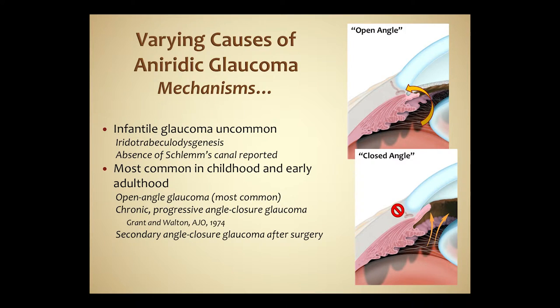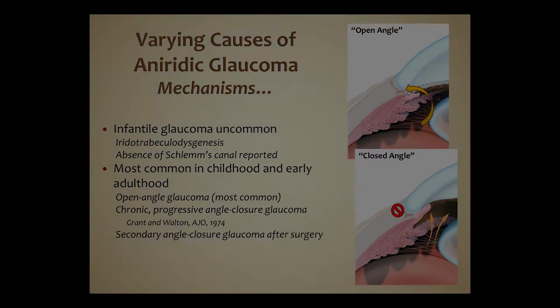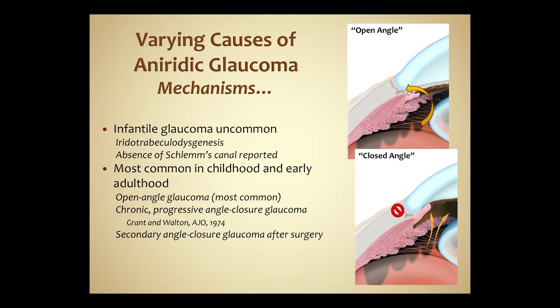Aniridia glaucoma has multiple mechanisms. Infantile glaucoma is very uncommon; when it does occur, it's oftentimes due to iridotrabecular dysgenesis. Absence of Schlemm's canal has been reported, but this is very rare. Most commonly, this problem occurs during childhood and early adulthood and is usually due to open-angle glaucoma. It can also be due to chronic progressive angle-closure glaucoma, though this is uncommon in our experience. Secondary angle-closure glaucoma after surgery is also relatively uncommon. So usually, it's an open-angle glaucoma occurring in childhood.